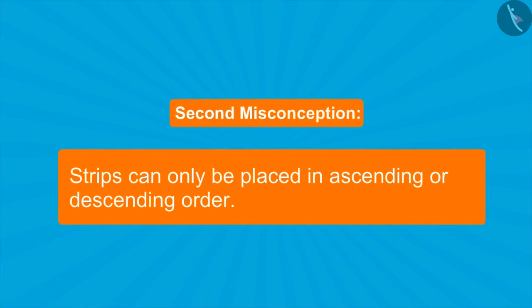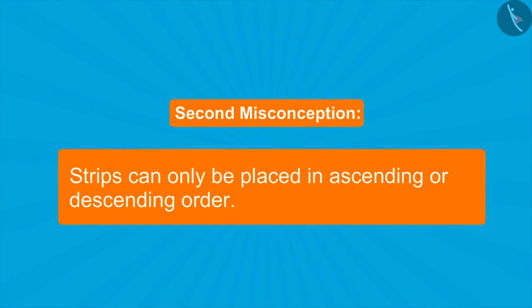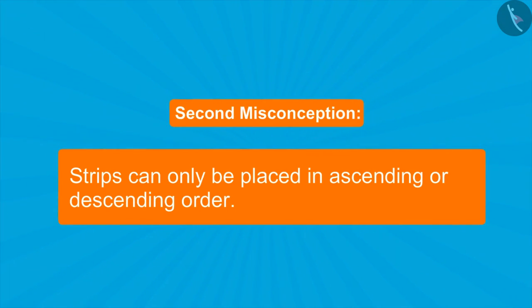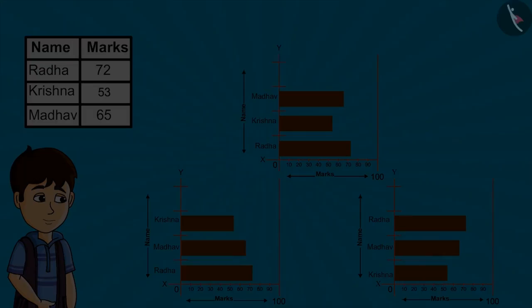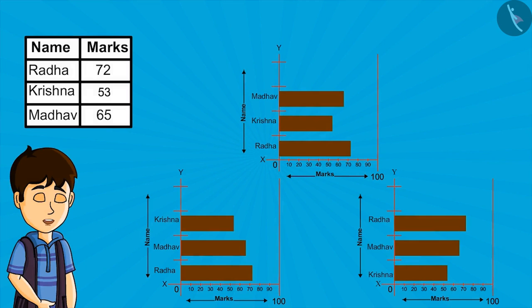Sometimes, we also have this confusion whether we can place strips only in the ascending or descending order. But kids, we can place strips in any order. We only need to keep in mind that the strip represents the right value.